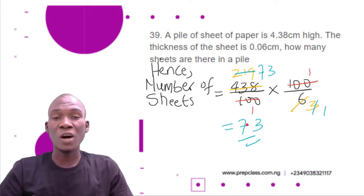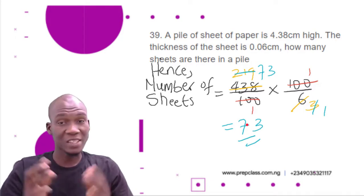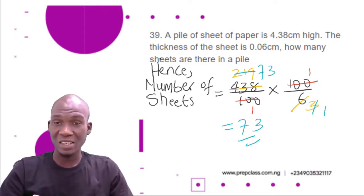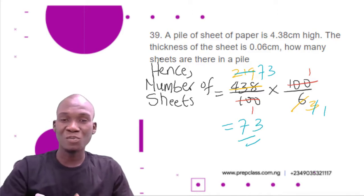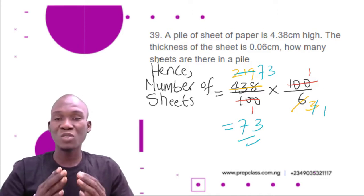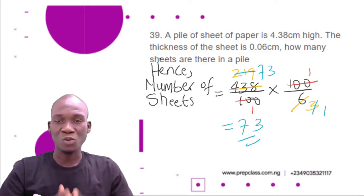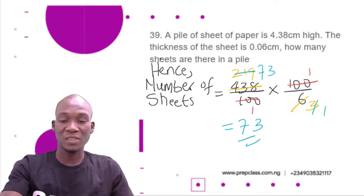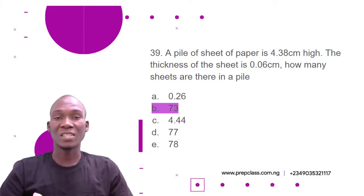The number of sheets in the pile is 73. We used the formula height divided by thickness to get this result. The correct option is B, 73.